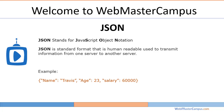Here is an example: name, Travis, age, colon, 23. In JSON, we separate the values using a comma, but a key-value pair — like name is the key, Travis is the value — is separated using a colon. Age colon 23: age is the key, 23 is the value. Salary: 60,000. This is an example of JSON.